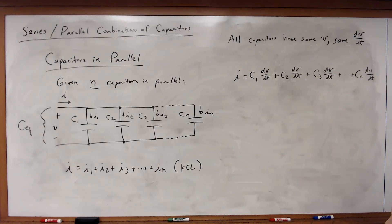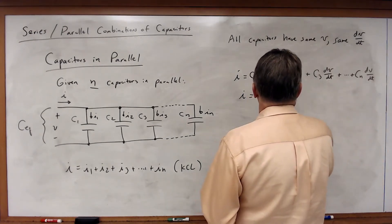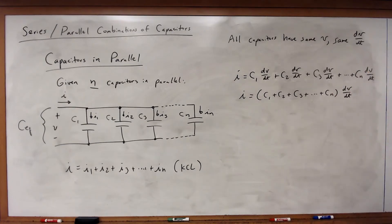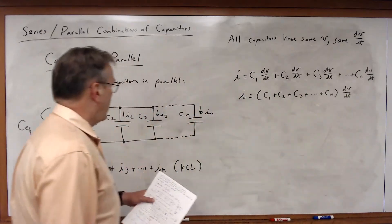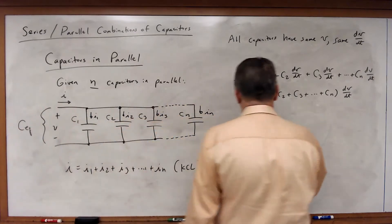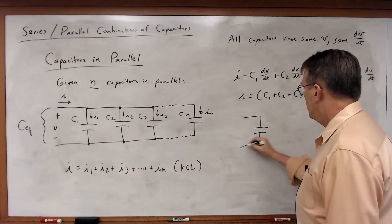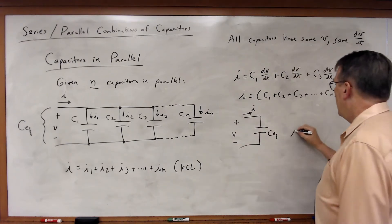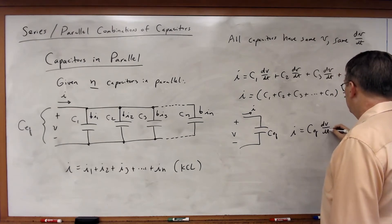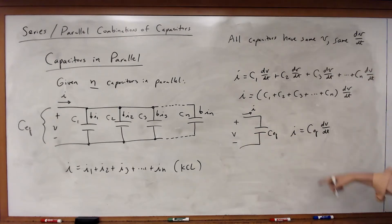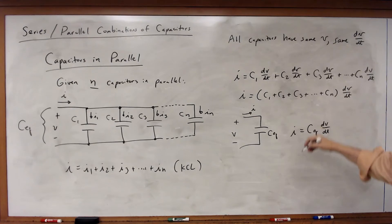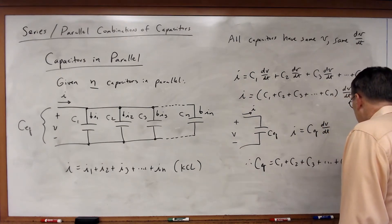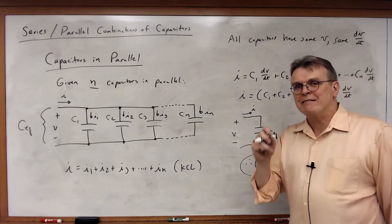Now I can factor out the dv/dt, so I equals (C1 plus C2 plus C3, all the way to C sub N) times dv/dt. I want to replace this network of capacitors with a single equivalent capacitor with the same voltage and the same current, where I equals C_equivalent times dv/dt. For that to be true, the equivalent capacitance must equal the sum of the individual capacitances.